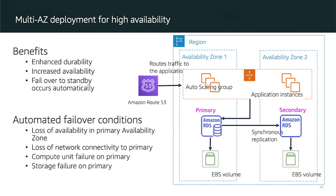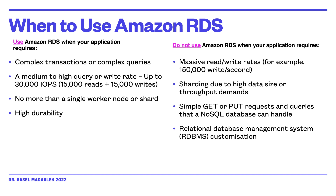You use Amazon RDS when your application requires complex transactions or complex queries with a relational database where there are relationships between entities, when you have a medium to high query or write rate up to 30,000 requests (15,000 reads plus 15,000 writes), and when you have more than one single worker node or shard. You can also use RDS when high durability is a must.